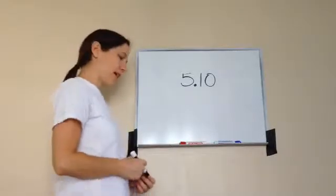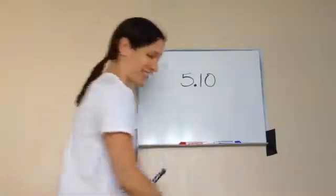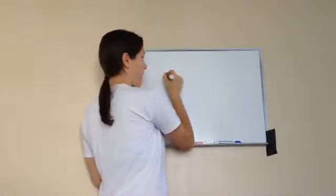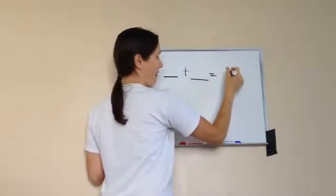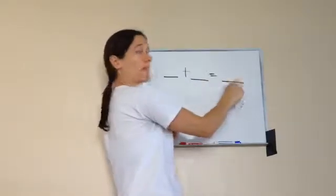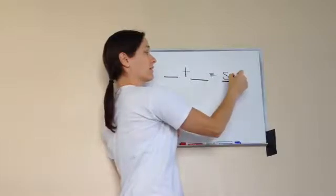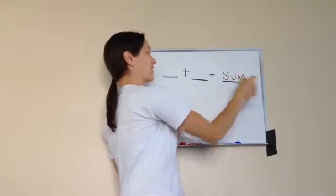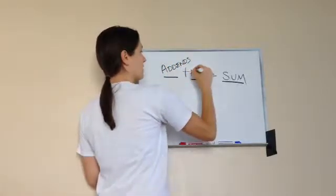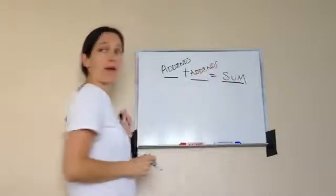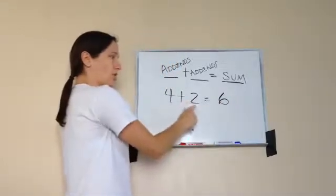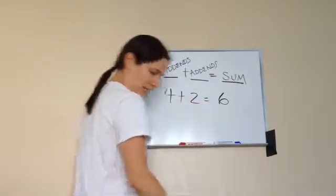Fifth grade lesson 10, on missing addends. Let's review what an addend is. Do you remember what the answer to an adding problem is called? It starts with an S — 'sum,' very good. And these right here are called addends. So if I did 4 plus 2 equals 6, the 4 and the 2 are addends, and the sum is 6.